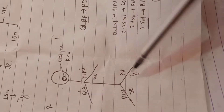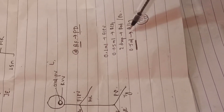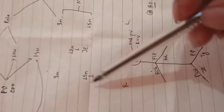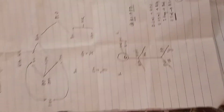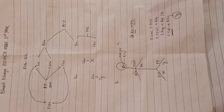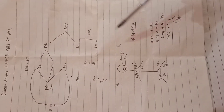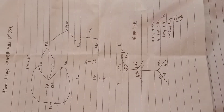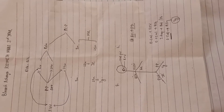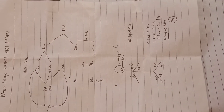The new update includes typhoid vaccine given at 15 months as well. So this is the new update for the full national immunization schedule of Nepal, covering all doses, sites, and tricks. Practice drawing this chart and you will not forget it for your exam. All the best. If you liked the video, don't forget to share it with your friends and subscribe. Bye bye.